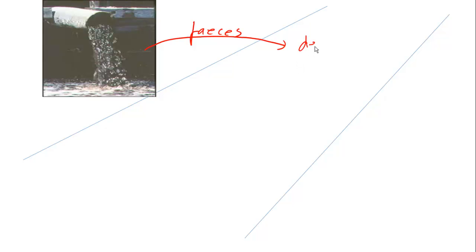Now faeces is dead organic matter. It's composed of all the stuff we can't digest in our food. So that's largely going to be cellulose from the cell walls of plants. We lack the enzyme cellulase. We as animals lack the enzyme cellulase. We can't digest cellulose back down into glucose. And so that is there in our faeces.